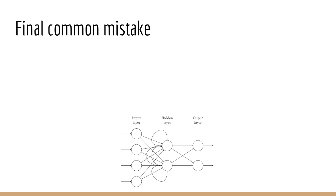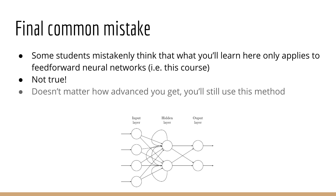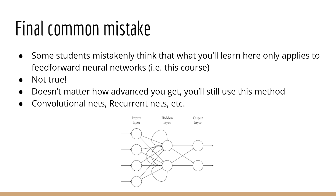As a last note for this lecture, I want to address another common mistake, which is to assume that this method only applies to feedforward neural networks. This is not the case because this same algorithm applies to all deep learning models and even some non-deep learning models as well. We always take the gradient and then take small steps in the direction of the gradient. It doesn't matter how advanced you get in deep learning — whether that's convolutional neural networks, recurrent neural networks, or any other fancy new neural network. We always use this method. It's just gradient descent. It happens to have a fancy name, which is backpropagation, but it's just the name that's fancy, not any of the technical details.